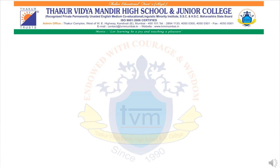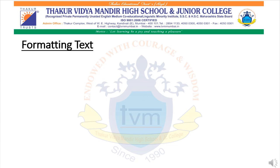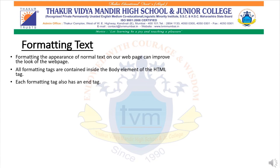To make our web page more attractive and innovative, we will learn the next feature called formatting text. Formatting text means the change in appearance of normal text to give a more attractive look. All formatting text features are the same as we have learned in MS Word. There are many features defined by HTML to make the text more attractive and presentable. In our session, we are going to understand five most commonly used formatting tags. Each formatting tag has an open and a closed tag.